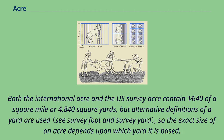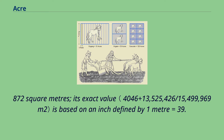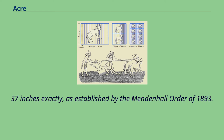Both the International Acre and the U.S. survey acre contain 1/640th of a square mile or 4,840 square yards, but alternative definitions of a yard are used, so the exact size of an acre depends upon which yard it is based. The U.S. survey acre is about 4,046.872 square meters; its exact value is based on an inch defined by 1 meter equals 39.37 inches exactly, as established by the Mendenhall Order of 1893.